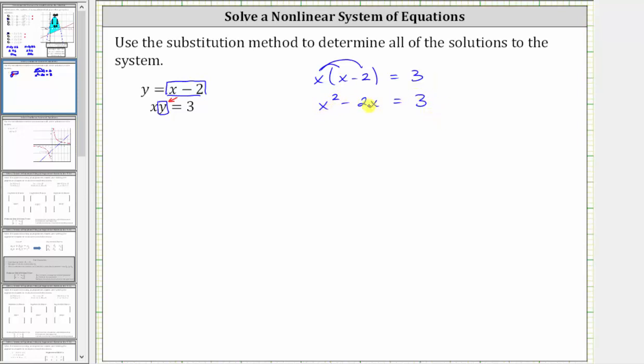We have a quadratic equation. Let's set the equation equal to zero and see if we can solve by factoring. So the next step will be to subtract three on both sides, which gives us x squared minus two x minus three equals zero.